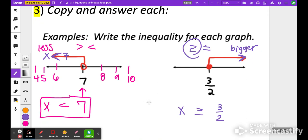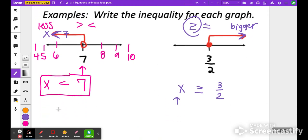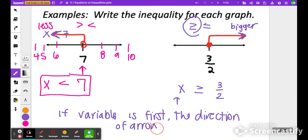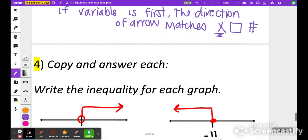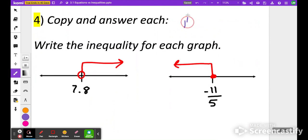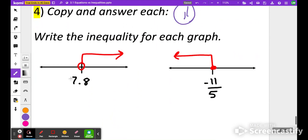This always works if the variable is first. So if variable is first, the direction of the arrow matches. That just means you have to have x, and then your inequality symbol, and then your number. Notice the x is first here. Let's try another one. Maybe see if you can even pause the video here, and try number 4 on your own.